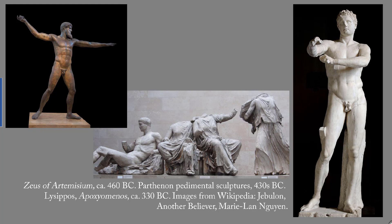From the early Classical Period, we have the Zeus of Artemisium, around 460 BC. From the High Classical Period, Phidias' Parthenon Pedimental Sculptures from the 430s BC. And from the Late Classical Period, Lysippus' Apoxiomenos, or Scraper, around 330 BC.